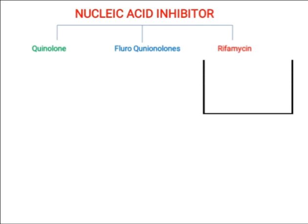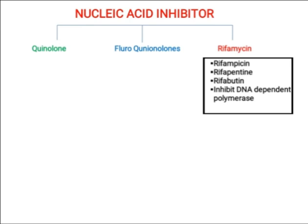Rifamycin examples include rifampicin, rifapentine, and rifabutin. These inhibit DNA-dependent RNA polymerase and are effective against Mycobacterium tuberculosis.